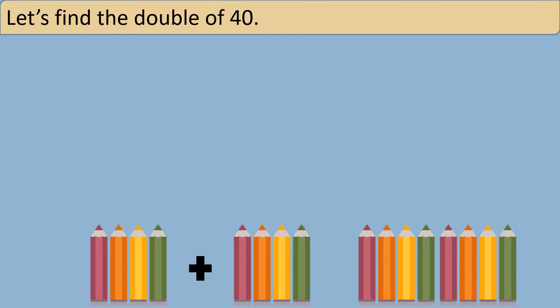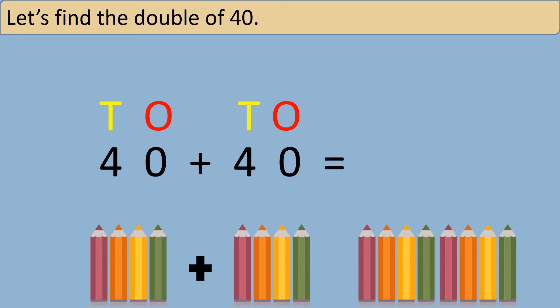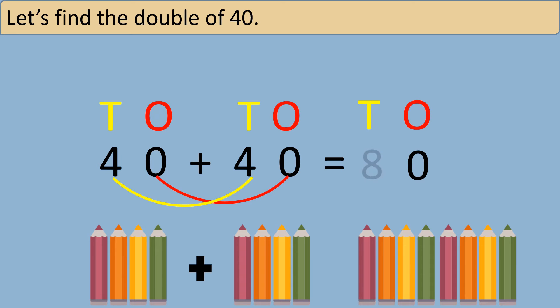Let's find the double of 40. I know that to find the double of 40 I need to add one more 40 to the number 40. I have written my number sentence like this. I am going to join ones to ones and tens to tens. By adding the ones I get 0, and by adding the tens I get 8 because 4 plus 4 equals 8. So the double of 40 is 80.